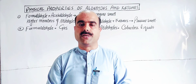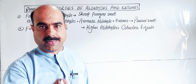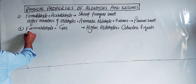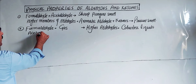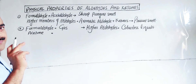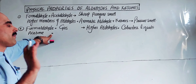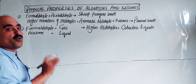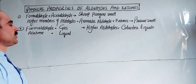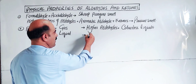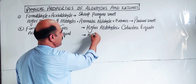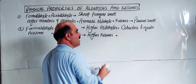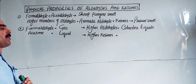For ketones, the very first member — acetone — is already in the liquid state at room temperature and pressure. Other higher ketones are also colorless liquids.